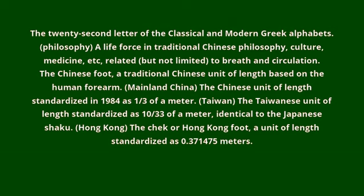In Taiwan, the unit of length is standardized as 10/30 thirds of a meter, identical to the Japanese Shaku. In Hong Kong, the Czech or Hong Kong Foot is a unit of length standardized as 0.371475 meters.